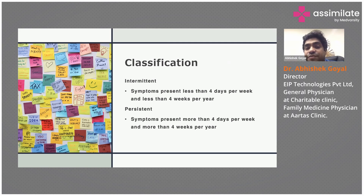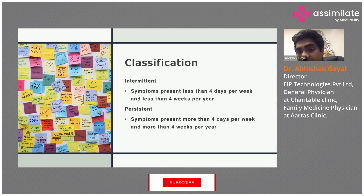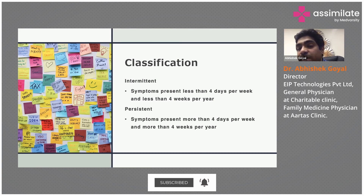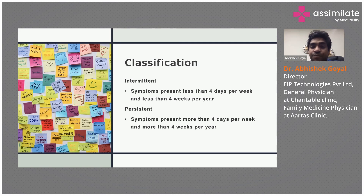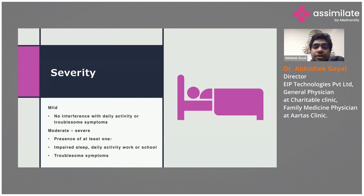We classify allergic rhinitis in terms of intermittent and persistent symptoms. Intermittent symptoms are present less than four days per week and less than four weeks per year. Persistent is someone who has more than four days per week and more than four weeks per year. This is the classification of allergic rhinitis.